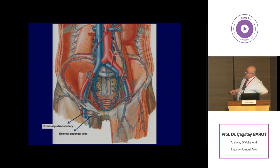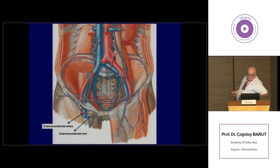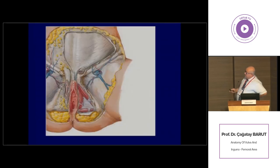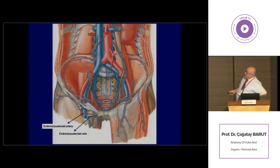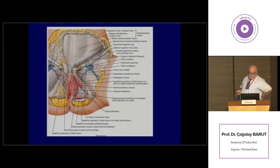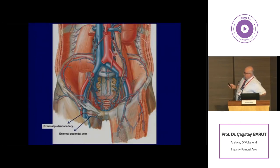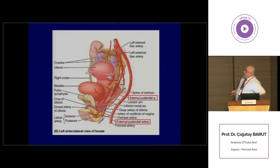This figure shows the external pudendal artery, which is a branch of the femoral artery. Just below the inguinal ligament it gives off this branch, and the external pudendal artery courses towards the midline to supply the anterior aspects of the vulva. Furthermore, in this region the femoral artery gives off several more branches, one of which is the superficial circumflex iliac branch to supply the lateral aspects of the inguinal region. It also gives off a superficial epigastric branch to supply the lower parts of the anterior abdominal wall. Here the superficial circumflex iliac branch is shown.